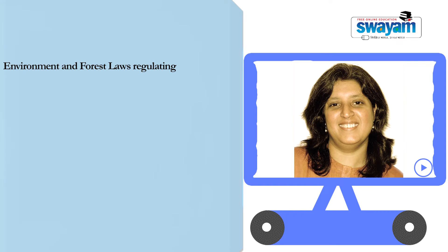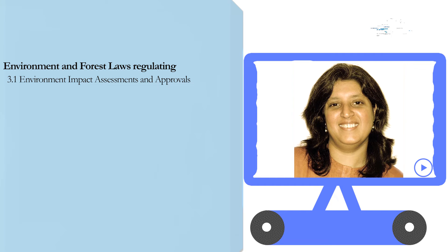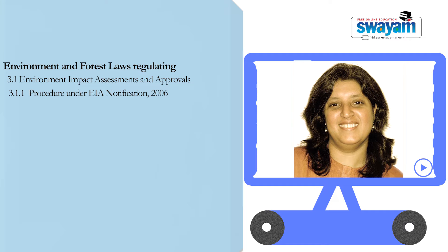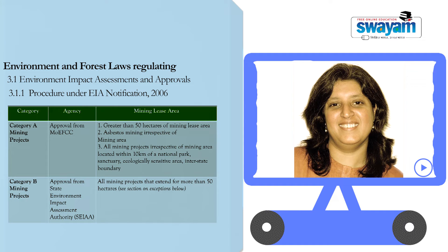We move on to looking at environment and forest laws related to mining. The first is the Environment Impact Assessment Notification and approvals. The procedure under the EIA Notification, issued under the Environment Protection Act, categorizes mining into Category A and Category B projects. Category A projects require approval from the Ministry of Environment, Forests and Climate Change — these are mostly mines with more than 50 hectares of mining lease area. Category B projects require approval from the State Environment Impact Assessment Authorities and cover mining operations up to 50 hectares of mining lease area.